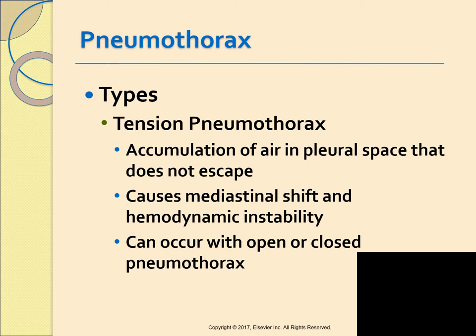If it's an open chest wound, the flap from the opening may act as a one-way valve — air comes in during inspiration but can't escape. A tension pneumothorax can also occur with mechanical ventilation and during resuscitative efforts. It can occur if a chest tube is clamped or becomes blocked; unclamping the tube or relieving the obstruction may correct the situation.